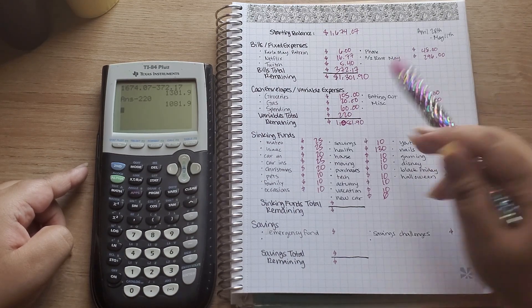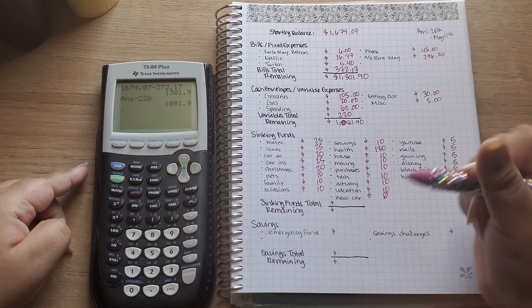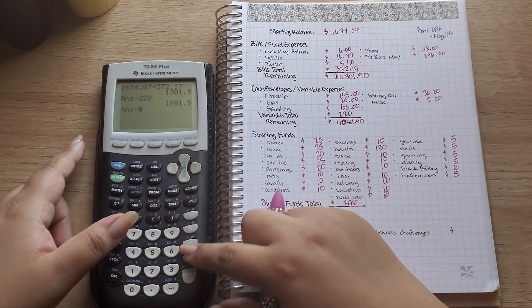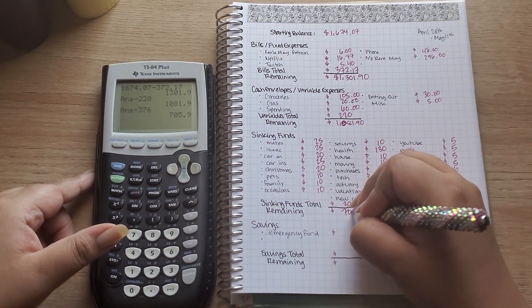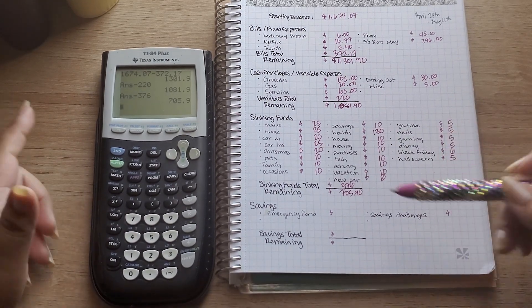So I already did the math on this specific one just because it's a lot longer and my sinking funds total is equal to $376. So minus $376 leaves me with $705.90 left to budget.